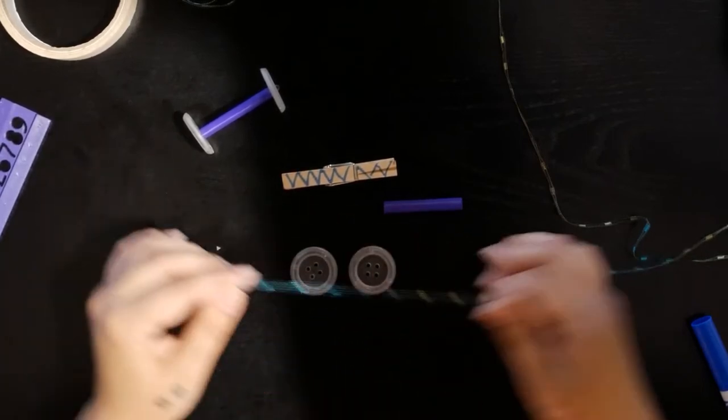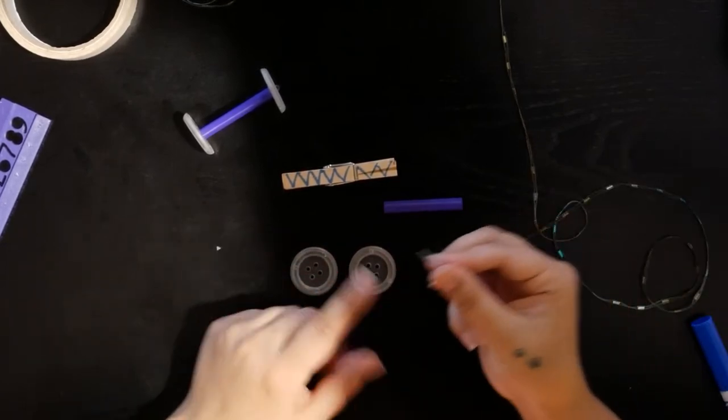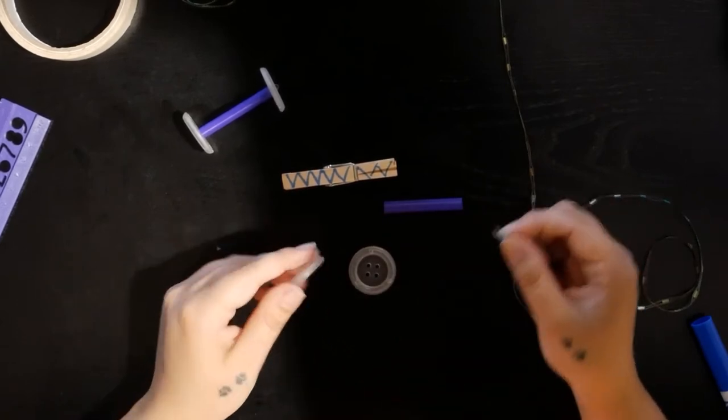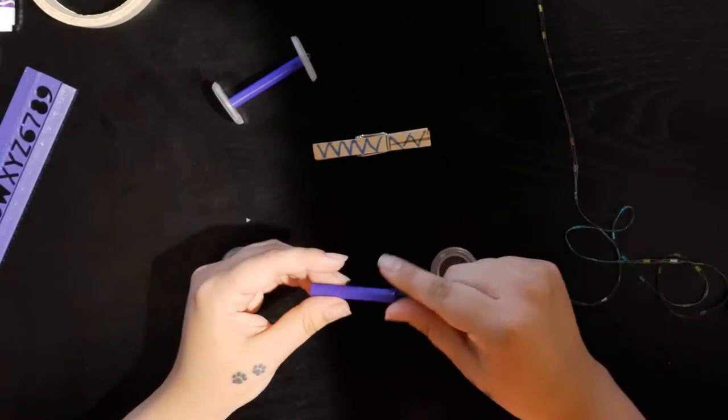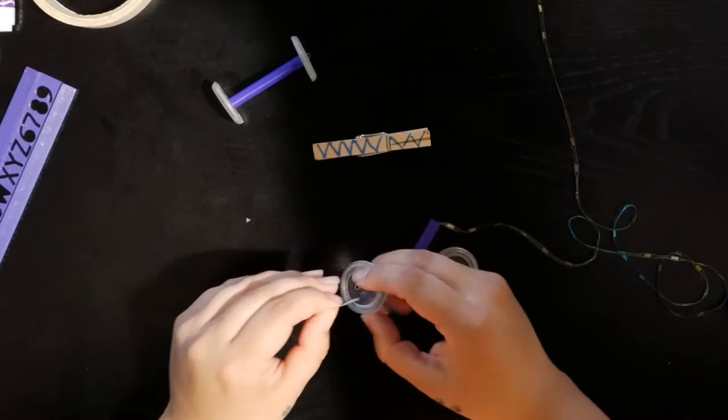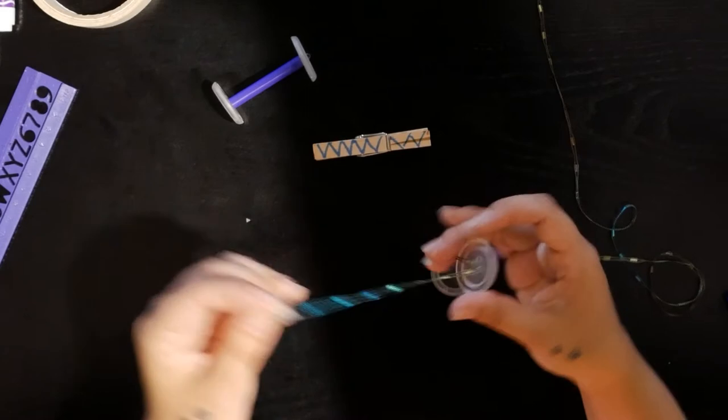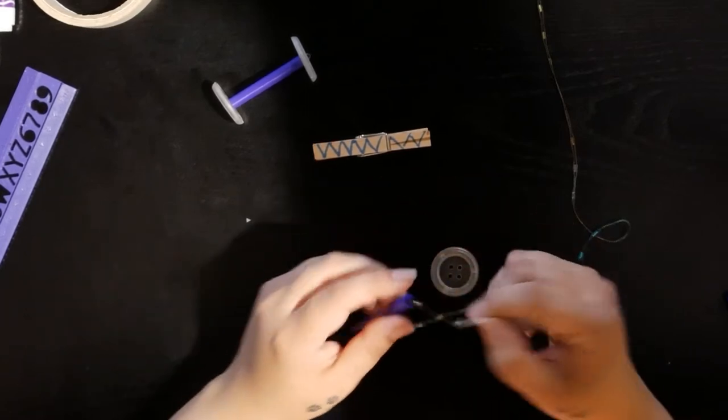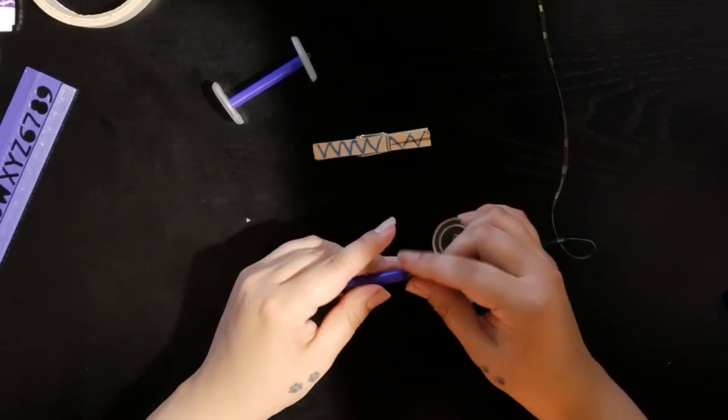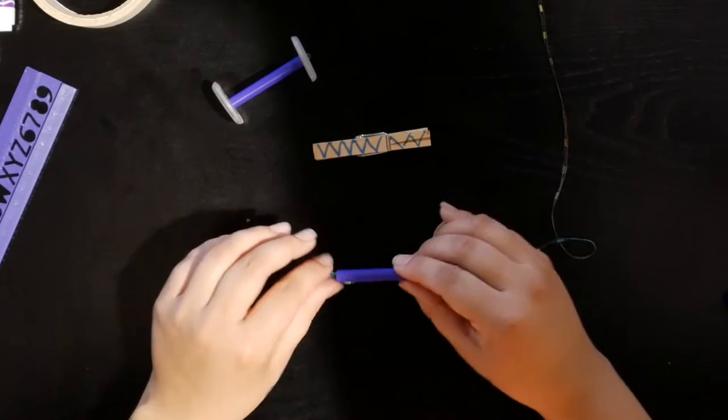Now we have our two buttons and our string. Jean taught me a really cool trick: if you put tape on it and fold it and then cut it so it's at a point, it's going to be a lot easier to thread. We're going to thread it through the straw first, then thread it through the button. Do it diagonal and then thread it back through the straw. You guys can do two separate pieces of string; we found that this was just easier.